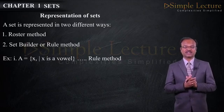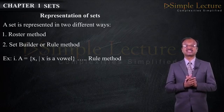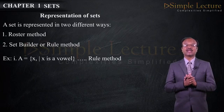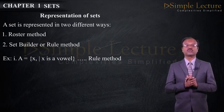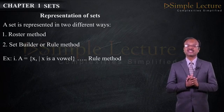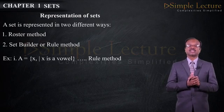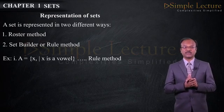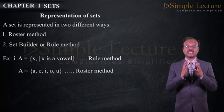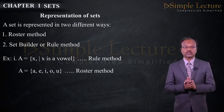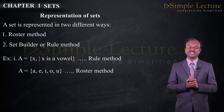Take for example the first one: Set A is equal to x such that x is a vowel, enclosed between two flower brackets. This is the representation of the set using rule method. The same set can also be written as set A is equal to {a, e, i, o, u} which is called as the roster method of representation of the sets.